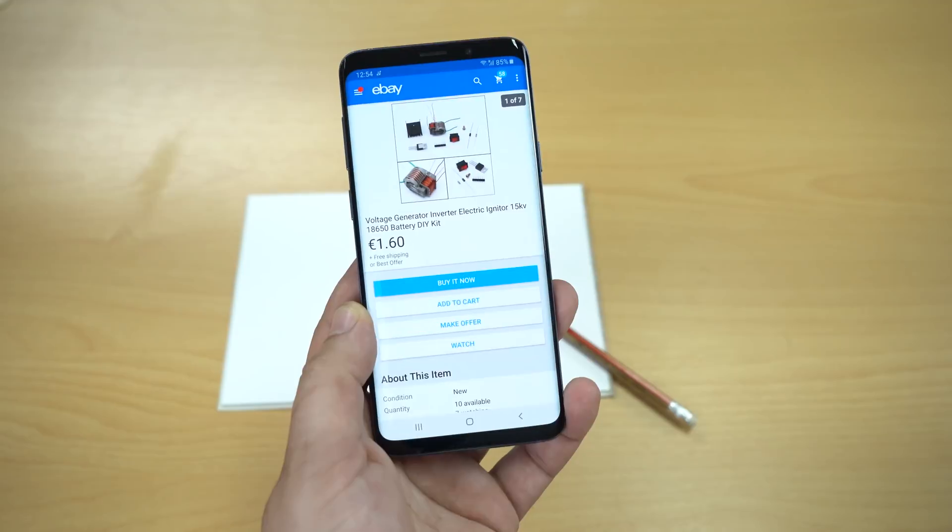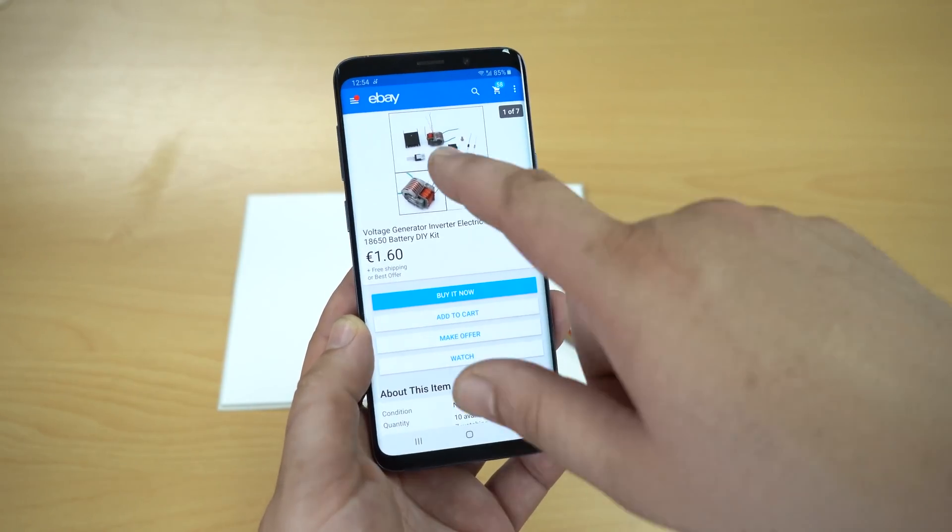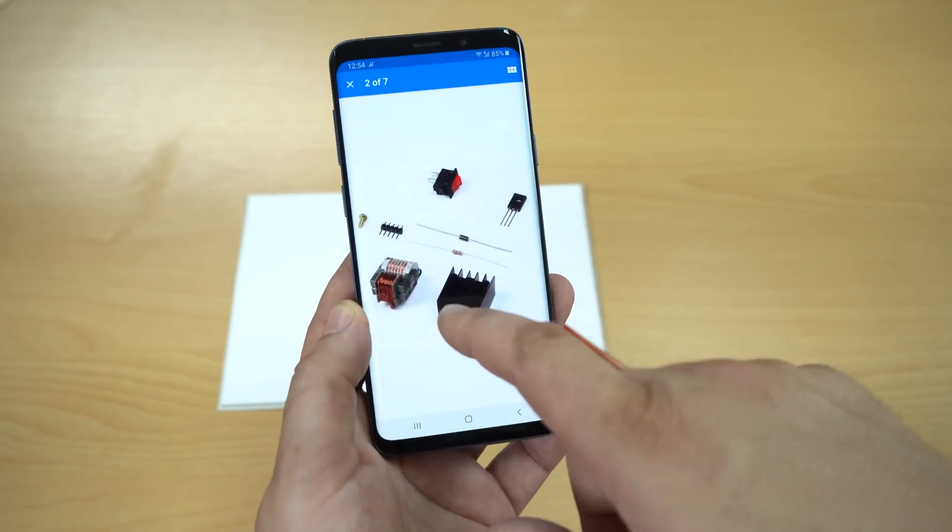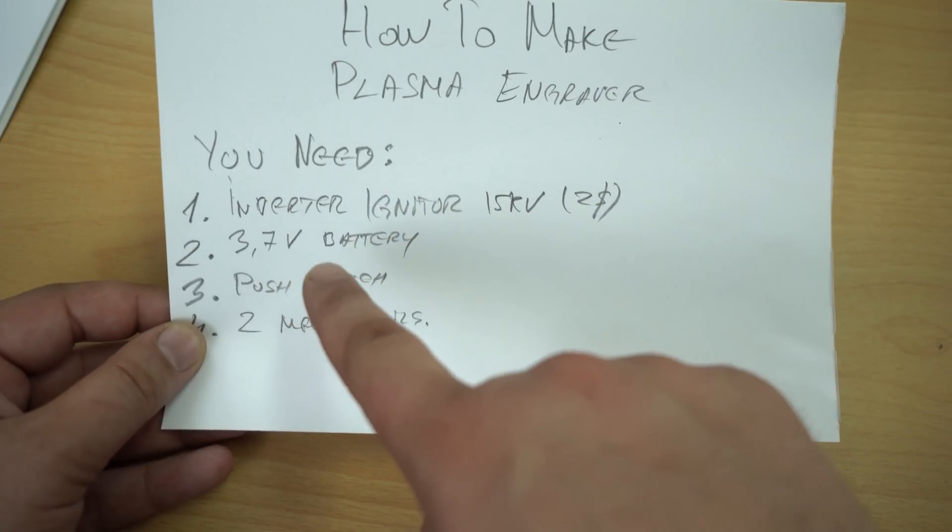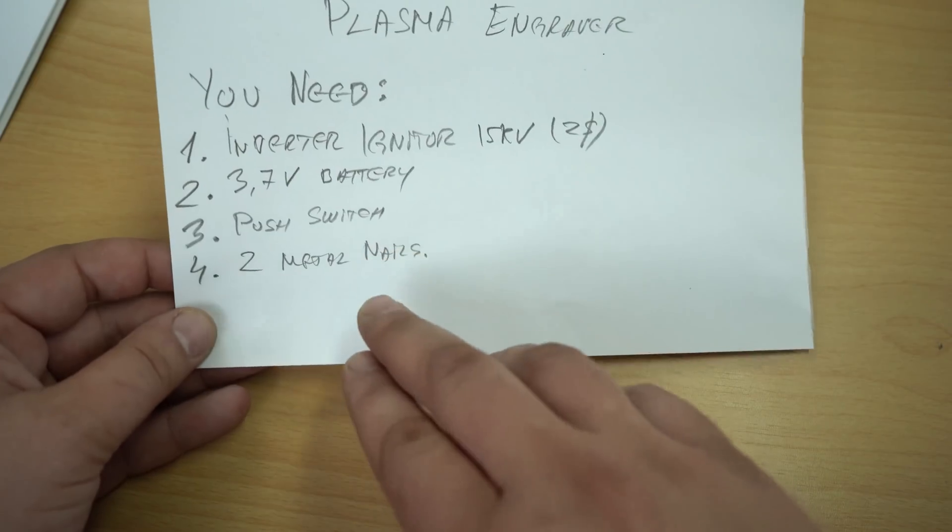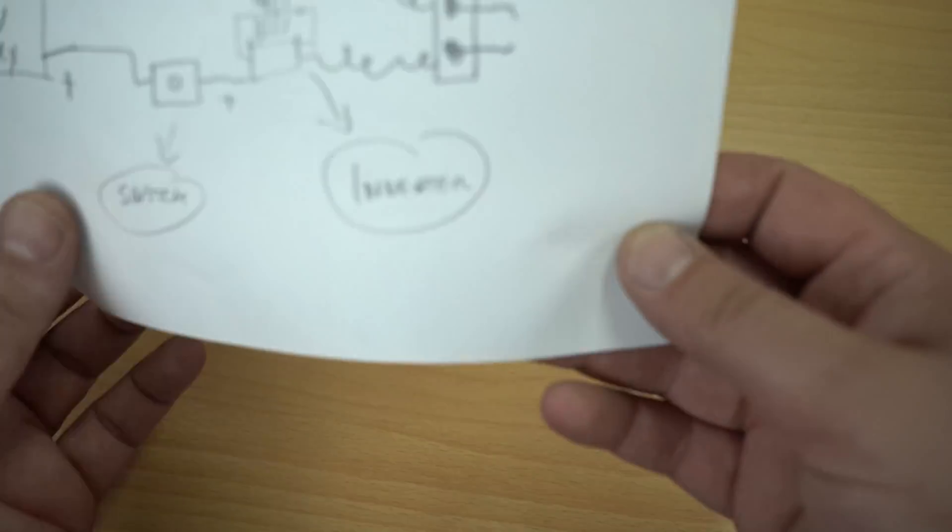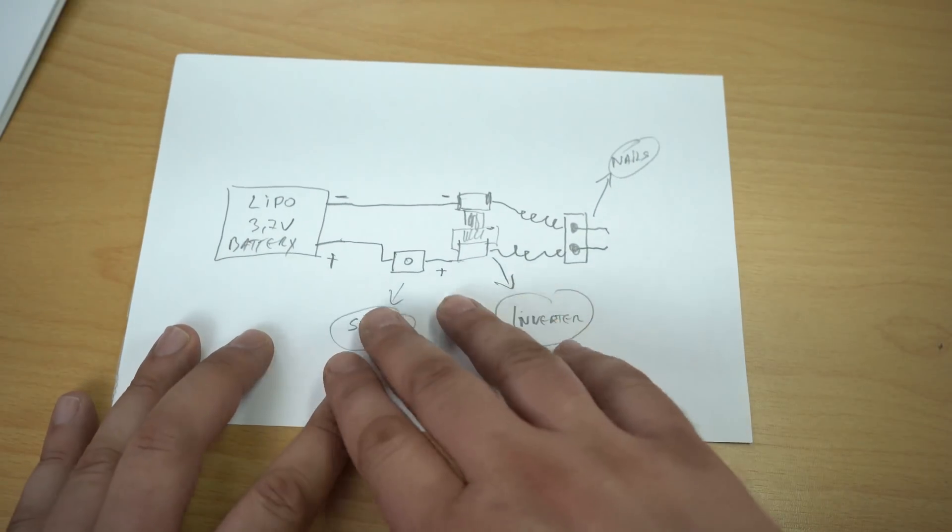You'll also need a 3.7 volt LiPo battery, a push switch, and two metal nails. Here is the simple diagram.